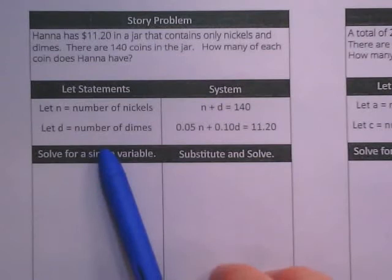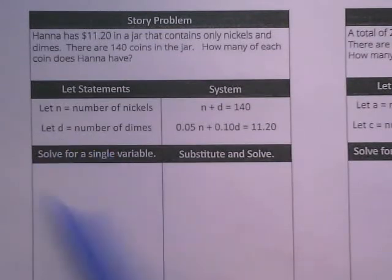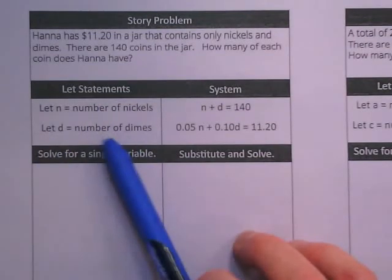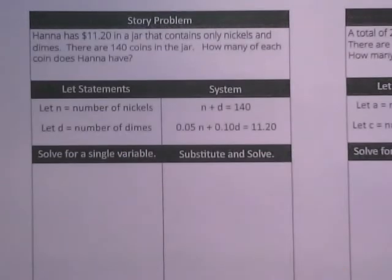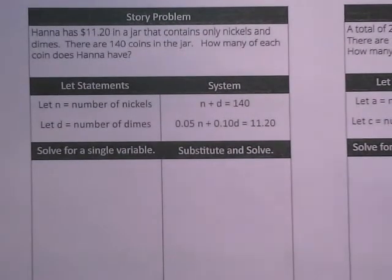So one of the things that we do when we're solving the word problem, we create what the variables are. In this case, we could say X and Y, but really one doesn't depend on the other. This is just a collection of coins, right?